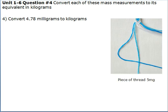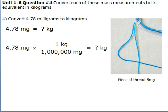Number 4: Convert 4.78 milligrams to kilograms. Now, as we are aware, there are 1,000,000 milligrams in a kilogram. Following this, we should multiply the 4.78 milligrams by 1 kilogram and divide that by 1,000,000 milligrams.